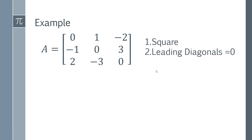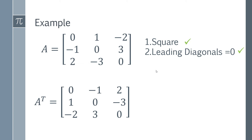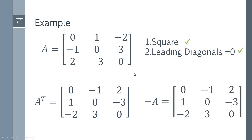Let's look at a matrix that follows both visual checks. This is a three by three square matrix and the leading diagonals are all zero, so it might be skew symmetric. We find the transpose by turning the rows into columns to get A transpose, and then we find minus A by taking every single element and switching its sign — so the one becomes minus one, minus two becomes two, minus one becomes one, and so on.